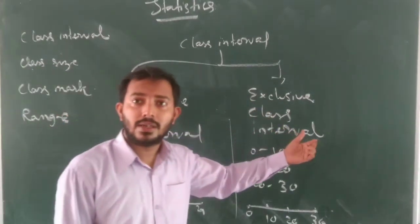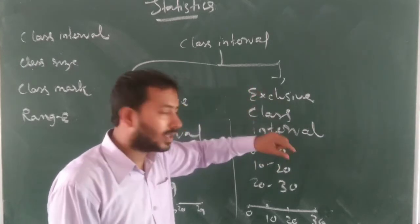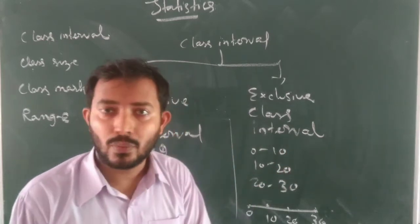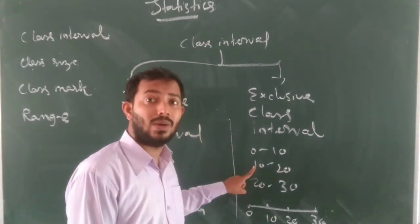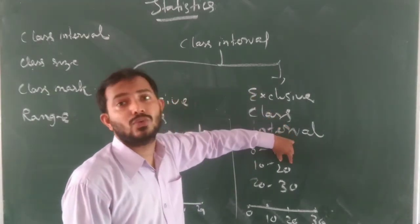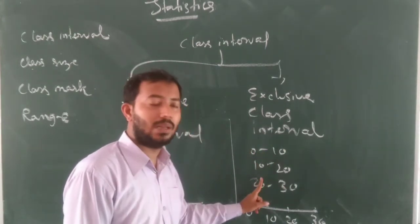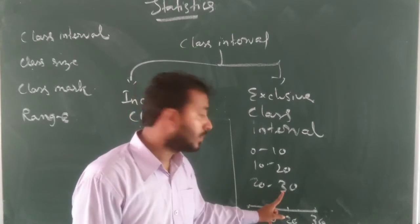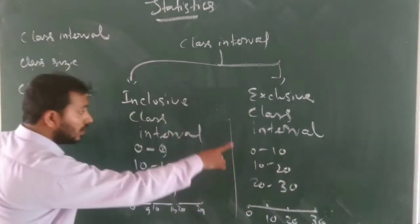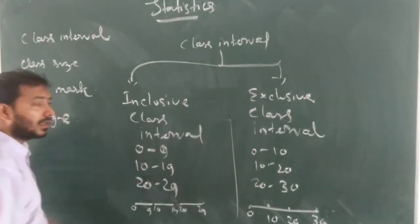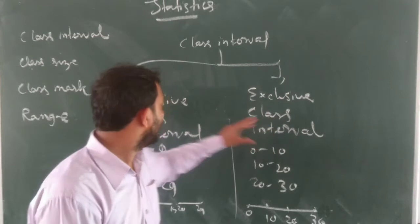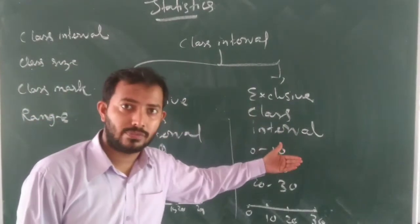If any student gets 9.5, we can keep that student's marks in the category 0 to 10. If any student gets exactly 10, we keep it in the second class interval. Because in exclusive class interval, the upper limit will be excluded — only the lower limit is included. But in inclusive class interval, both upper and lower limits are included.